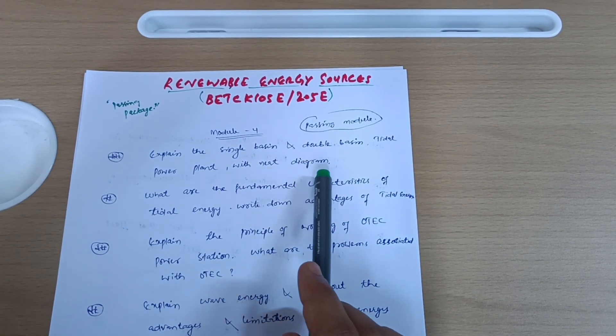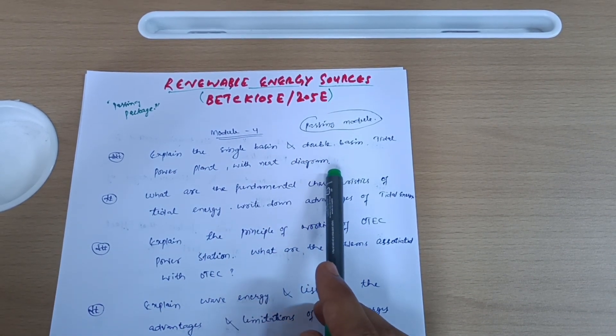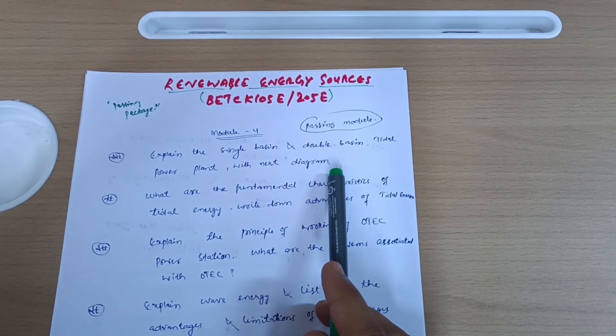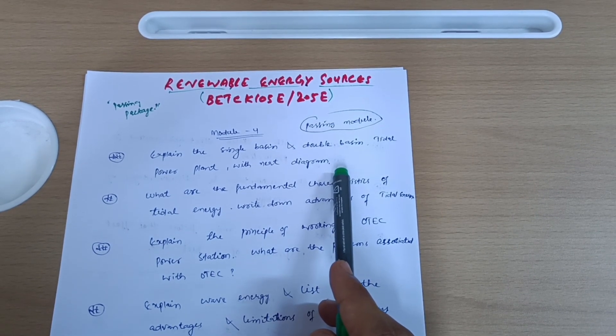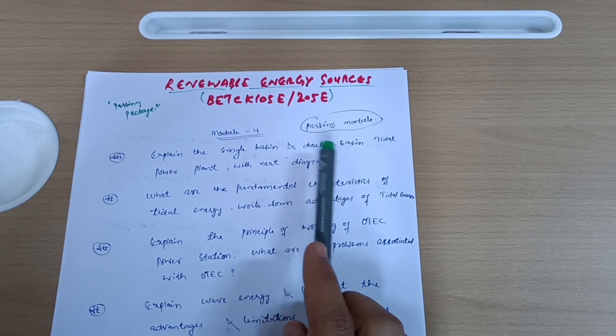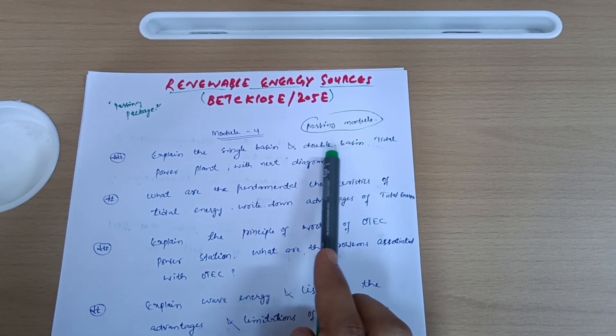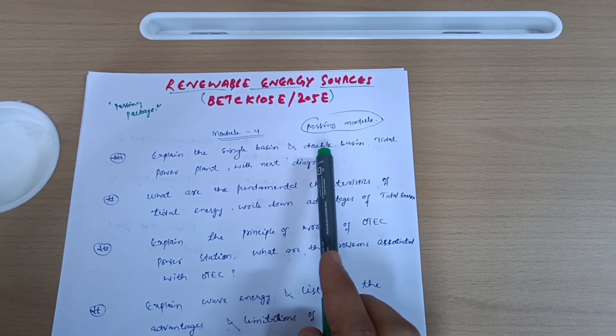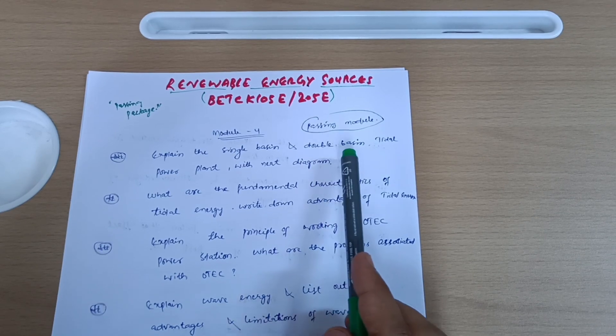It is a diagrammatic subject, so your main focus should be on diagrams. Try to make groups. If you are three to four friends, try to discuss these concepts in your own convenient language. In the examination, just draw the neat sketch and try to write down the theory in your own words. You will get the full marks.